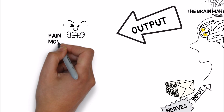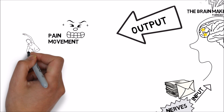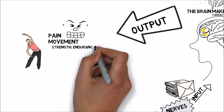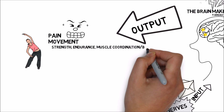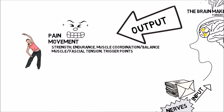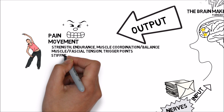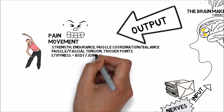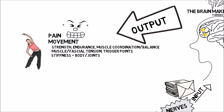Other outputs of the brain include movement changes. Most commonly we think about strength, endurance, muscle coordination, and muscle balance. But what you might not realize is that muscle tension, fascial tension, and even trigger points are actually outputs of the body as strategies for protection. Stiffness is another movement change — this includes that morning feeling like you're 900 years old getting out of bed, and even what a healthcare provider notices as a stiff joint. Some of what they're feeling is in fact the result of decisions of your brain.